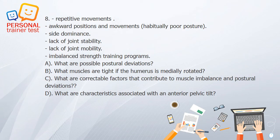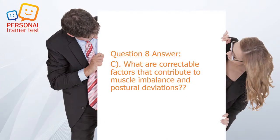Question 8. A. What are possible postural deviations? B. What muscles are tight if the humerus is medially rotated? C. What are correctable factors that contribute to muscle imbalance and postural deviations? D. What are characteristics associated with an anterior pelvic tilt? Answer: C. Correctable factors include repetitive movements, awkward positions and movements, habitually poor posture, side dominance, lack of joint stability, lack of joint mobility, and imbalanced strength training programs.